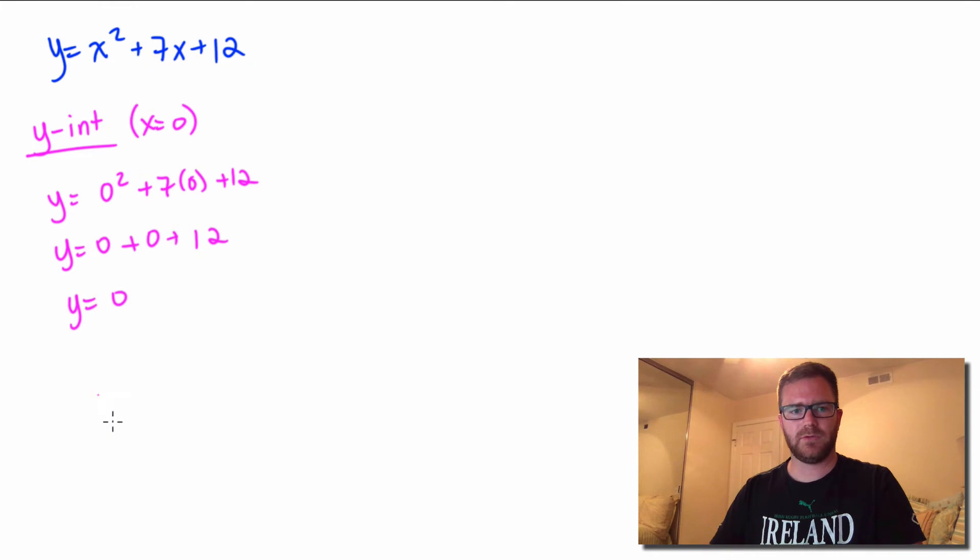So we get y equals zero. Oh, whoops. We get y equals 12. Sorry. Zero plus zero plus 12 is 12. So our y-intercept is going to have the ordered pairs of zero comma 12, because the x-coordinate is zero, the y-coordinate is 12.